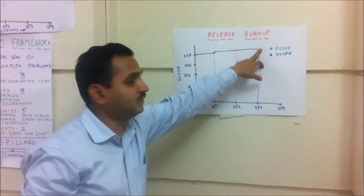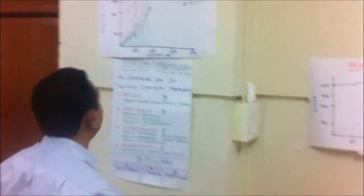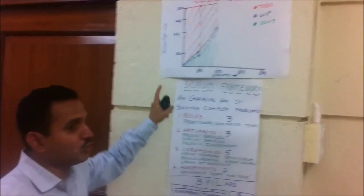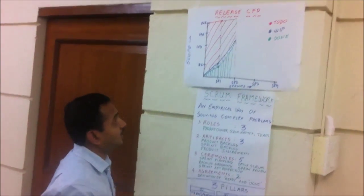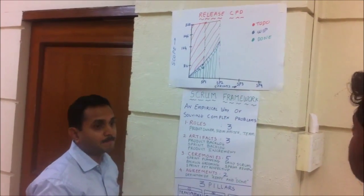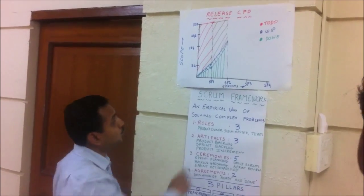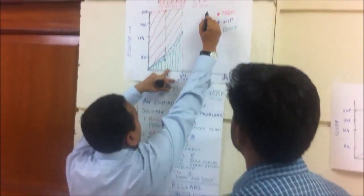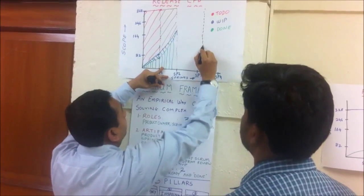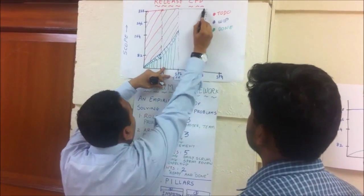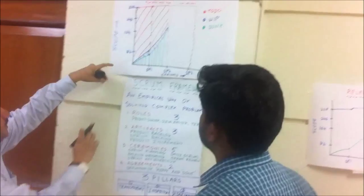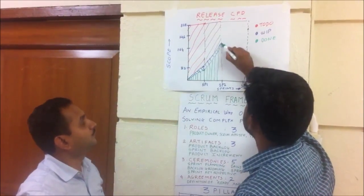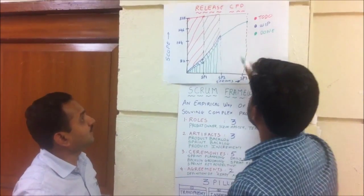We are done here, and this is scope. Now let's draw the cumulative flow diagram. As I told you, the cumulative flow diagram is going to have multiple statuses. How much is done? 252. Please mark 252 on SP3 in green color and draw the line.